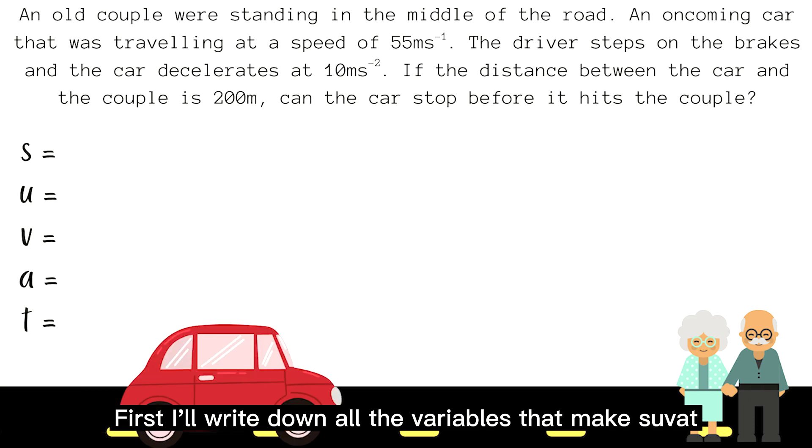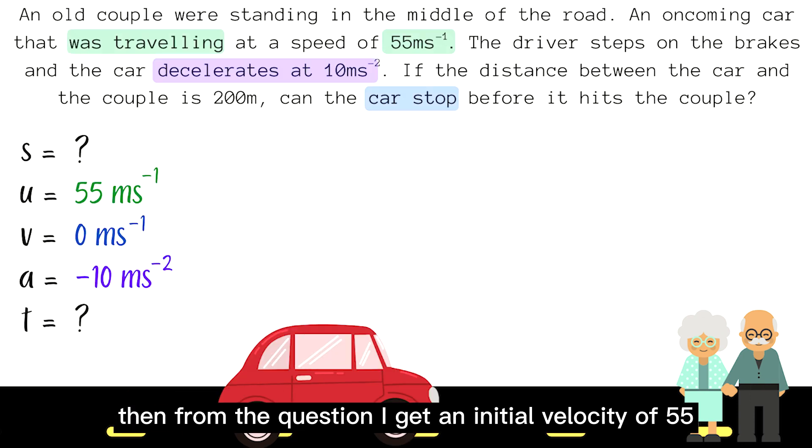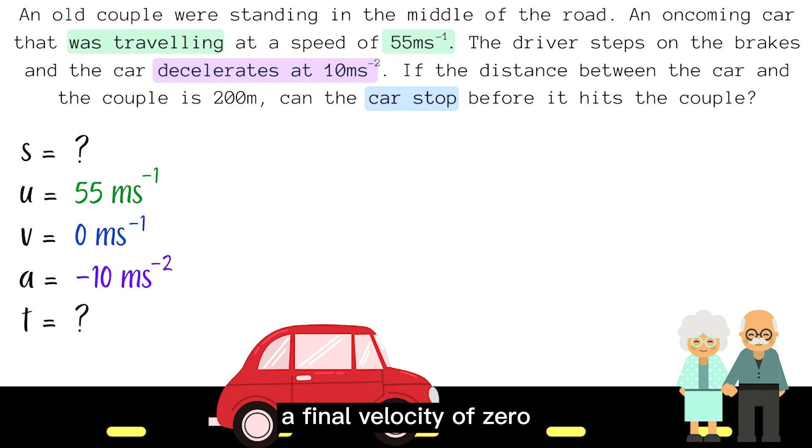First, I'll write down all the variables that make SUVAT. Then, from the question, I get an initial velocity of 55, a final velocity of 0 because the car comes to a stop, and an acceleration of negative 10 because it is decelerating.